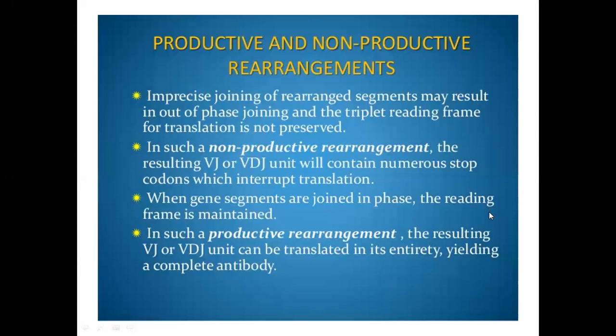When gene segments are joined in-phase, the reading frame is maintained. If it is out-of-frame, it leads to non-productive rearrangement. If it is in-phase, the reading frame is maintained, and that leads to productive rearrangement, resulting in a proper translational product — a proper antibody.